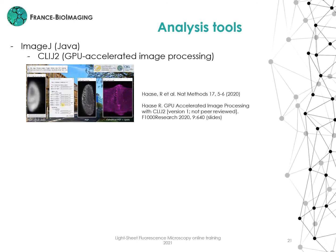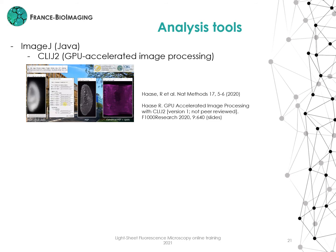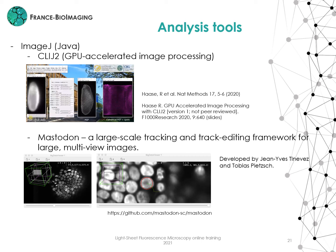In the following slides, I will introduce two analysis tools developed mainly in Fiji or ImageJ. The first one is called CLIJ2, a library of GPU-accelerated image processing commands developed by Robert Haase from Max Planck Institute in Dresden. You can use common Fiji programs with a GPU implementation, which is quite important for big data. This library can also be used in Java, MATLAB, and Icy. It uses OpenCL and works with most graphics cards. The next one is called Mastodon, a large-scale tracking and track editing framework for large multiview images, developed by Jean-Yves Tinevez from Pasteur Institute and Tobias Pietzsch from Max Planck Institute. It allows interactive browsing and building tracking and lineage data from images. It is user-friendly and has semi-automatic and fully automatic tracking.